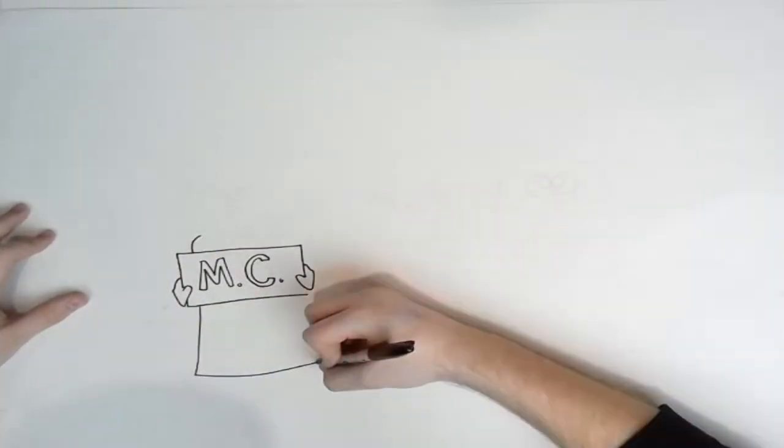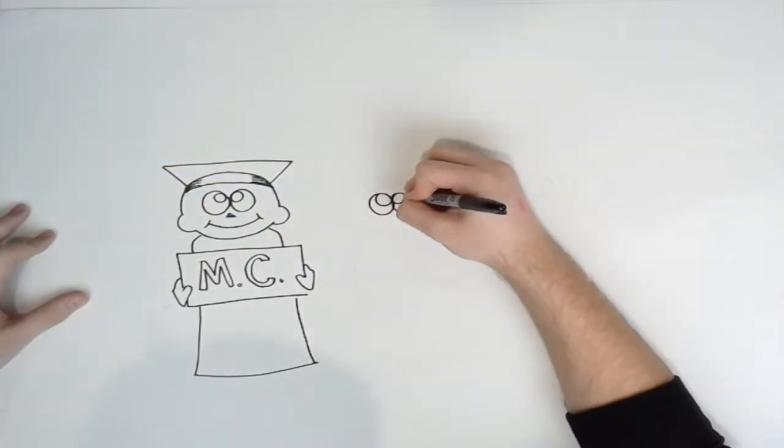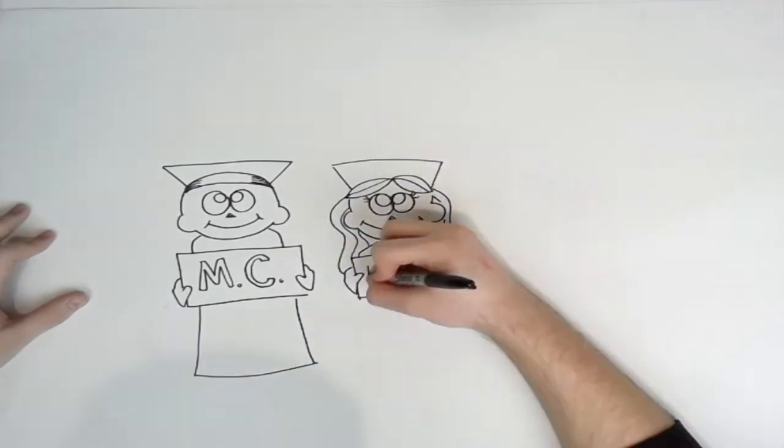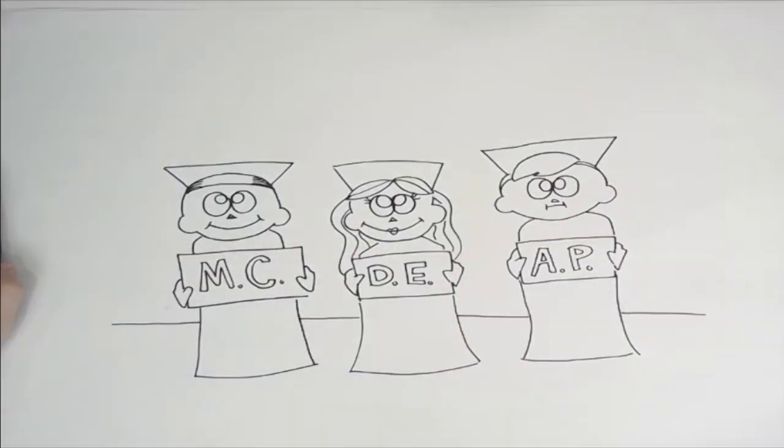We also have more options outside of our Gulfport High campus. Students can participate in middle college and graduate with a high school diploma and an associate's degree. They can take dual enrollment courses here on campus or take advanced placement, also known as AP classes, with our academic teachers.